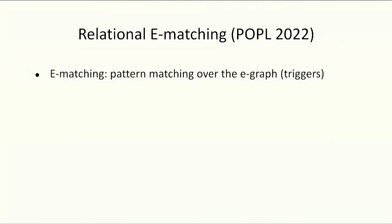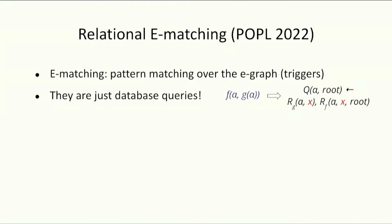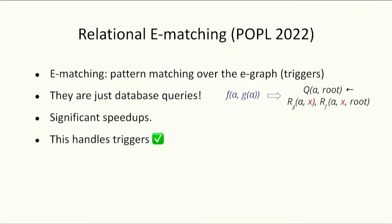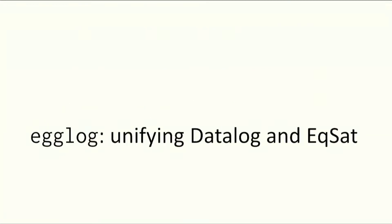Our previous work on relational e-matching shows the first half of the story. E-matching is the problem of doing pattern matching over the eGraph. In that work, we show that they are just database queries, which gives us significant speed-ups and handles the trigger part of the story. This leads to our work on egglog, which unifies datalog and equality saturation.